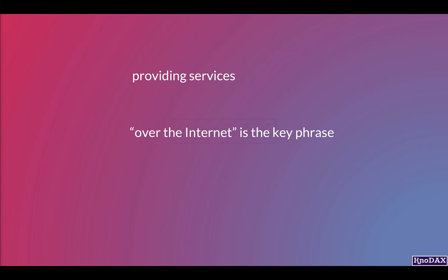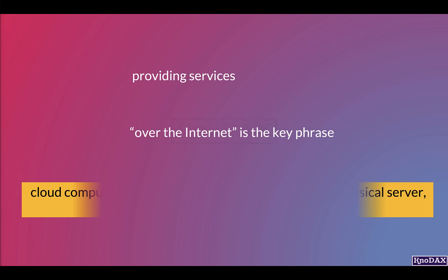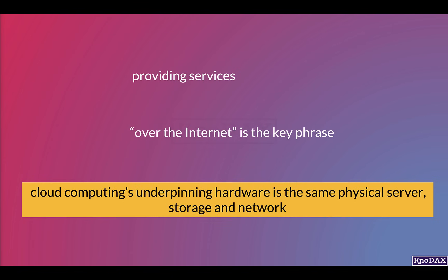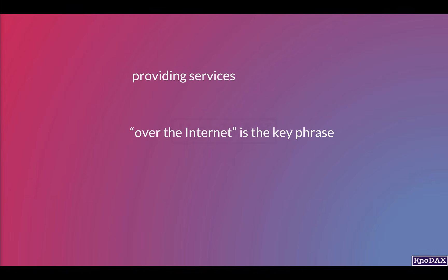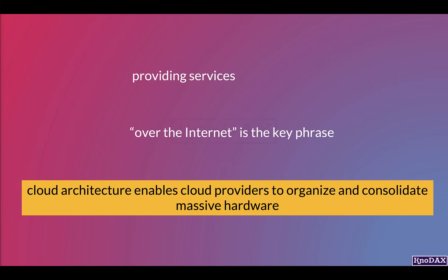Cloud computing's underlying hardware is the same physical server, storage, and network. The difference is that cloud architecture enables cloud providers to organize and consolidate massive hardware — such as computing resources, storage, network, and software — to make it available over the internet.